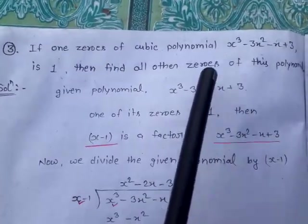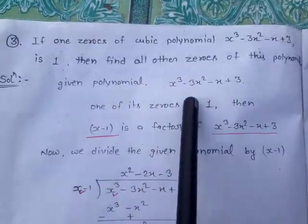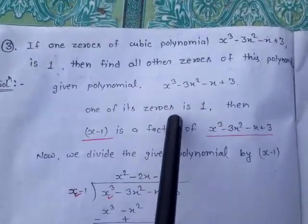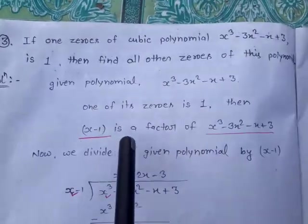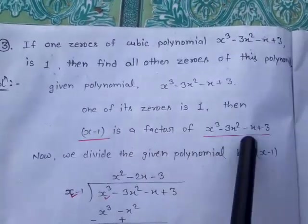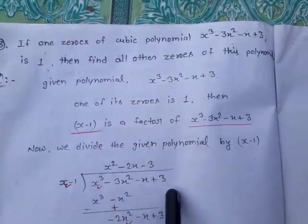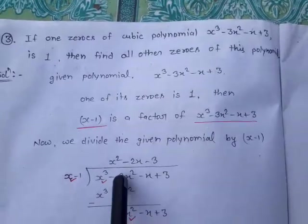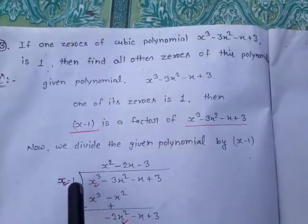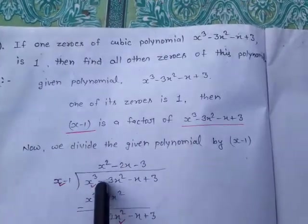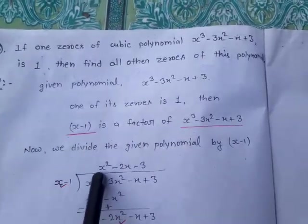Since the highest power is 3, the total number of zeros is 3. Given one zero is 1, so (x − 1) is a factor of this polynomial. Dividing x³ − 3x² − x + 3 by (x − 1): the first term x³ ÷ x = x², so the first quotient term is x². Multiplying x² by (x − 1) gives x³ − x². Reversing signs and cancelling, we get −2x² − x + 3.